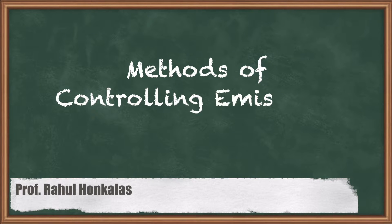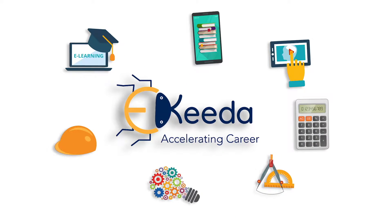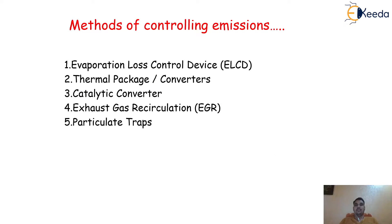Dear friends, in this video we are going to discuss about methods of controlling emissions. In the previous videos, we already discussed about the different engine emissions in the case of spark ignition engine as well as in the case of the compression ignition engine. The major cause of engine emission is nothing but the incomplete combustion taking place inside the engine cylinder in both the cases of SI and CI engine.